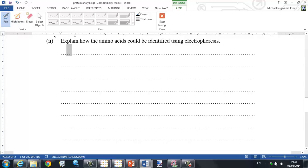The next is explain how amino acids can be identified using electrophoresis. The mixture of amino acids is spotted in a gel. Next a voltage or potential difference is applied.